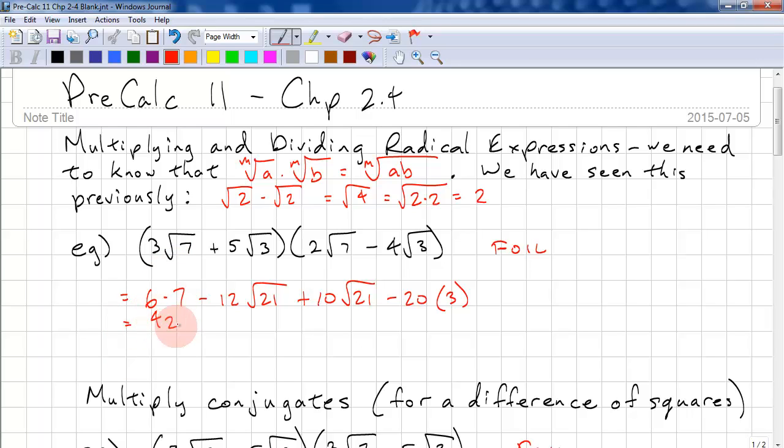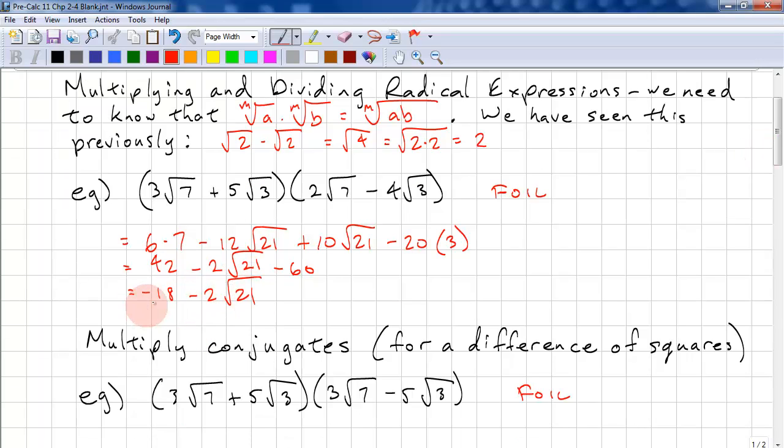Okay, so we have 42. These are like terms. So we have minus 12 and 10, so that's minus 2 root 21. And then finally, 20 times 3, that's minus 60. And one last simplification step. 42 minus 60, that's minus 18. And that's our answer. It's customary to put the rational term before the radical term.